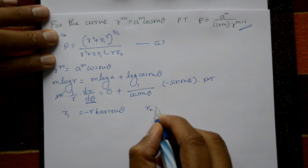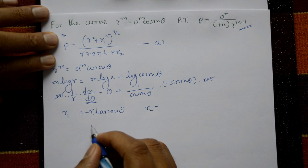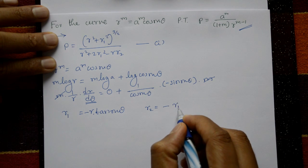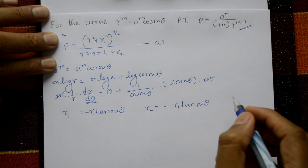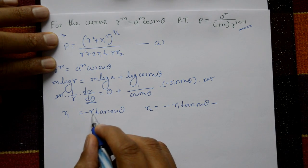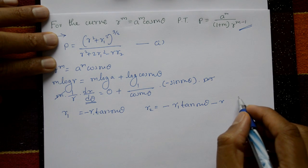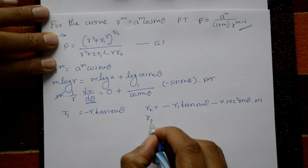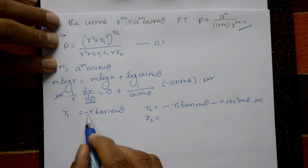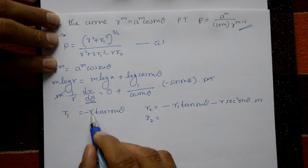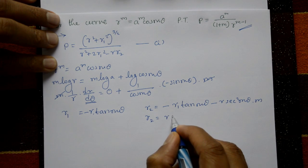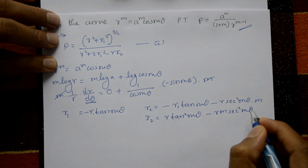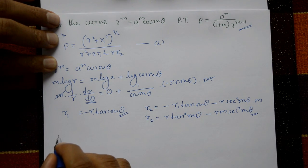Differentiating r1 = −r·tan(mθ) again using the product rule: r2 = −r1·tan(mθ) + (−r)·sec²(mθ)·m. Substituting r1 = −r·tan(mθ): r2 = r·tan²(mθ) − r·m·sec²(mθ). These are the expressions for r1 and r2.